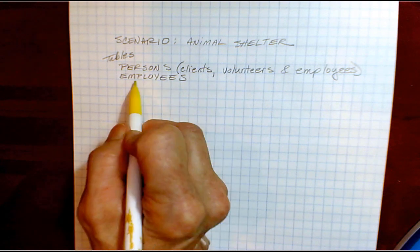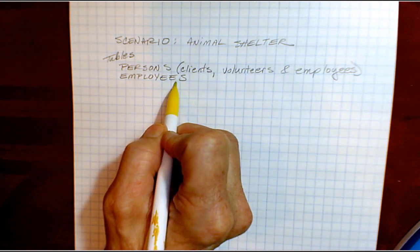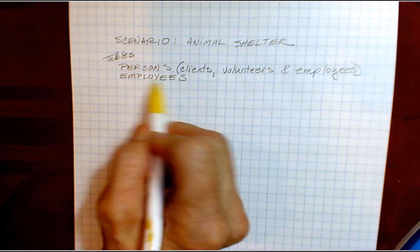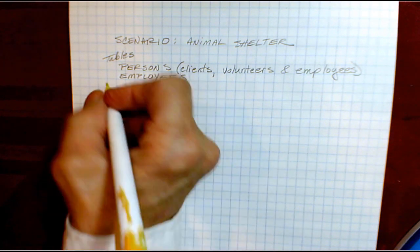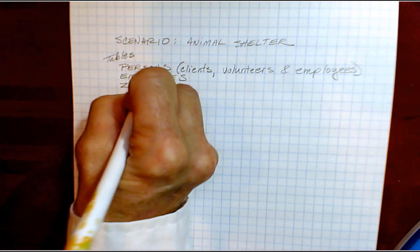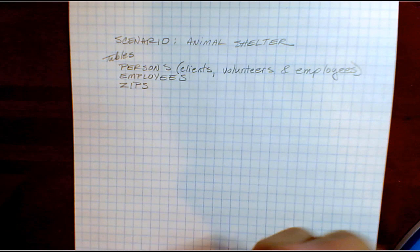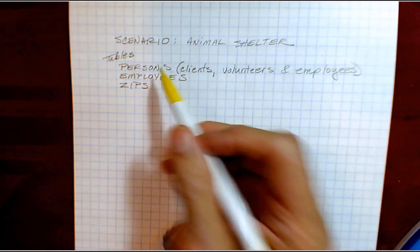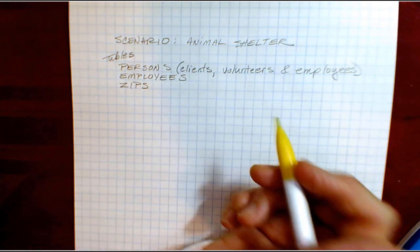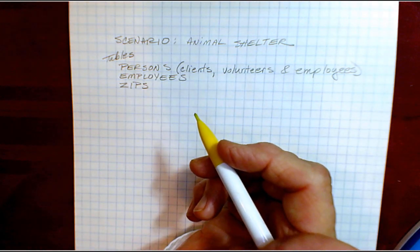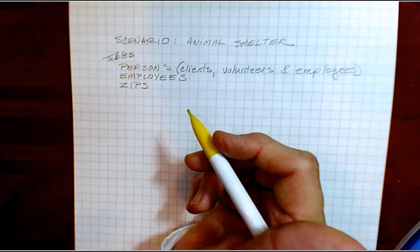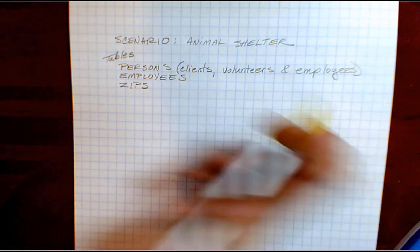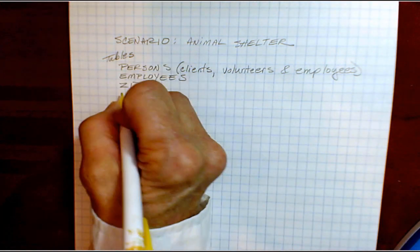But we also have things that are specific to employees and only employees. So it will be a separate table. We're going to have a zips table that provides the city and state information if we enter in a zip code. So you've seen this before when you're filling out something on the web probably. Select a zip code, a mail code, and then related information comes in automatically.